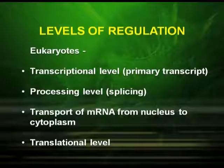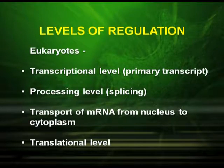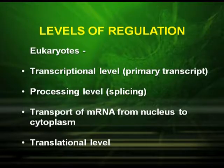In eukaryotes, gene expression is regulated at four different levels: the transcriptional level, that is during the formation of the primary transcript; the processing level, that is at the splicing level; then transport of mRNA from nucleus to cytoplasm; and at the last, the translational level.